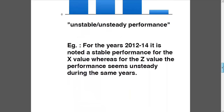Let's see an example for both. For the years 2012 to 2014, it is noted a stable performance for the x value, whereas for the z value the performance seems unsteady during the same years. Just an example — nothing to memorize or to use exactly like that.